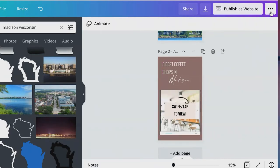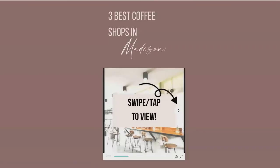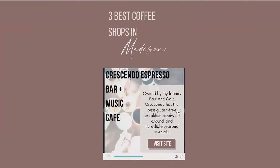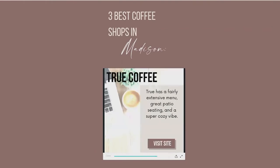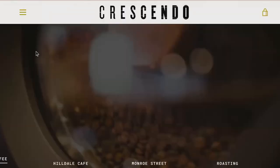Now when I view this as a website — of course it will look different on a phone — you can see that I can just swipe through these at my own pace. I can even click to visit the site for one of them and it will take me right there. I want to point out that I was able to add clickable links in the original slideshow, and when viewed in the website as an embedded slideshow, those links are active.